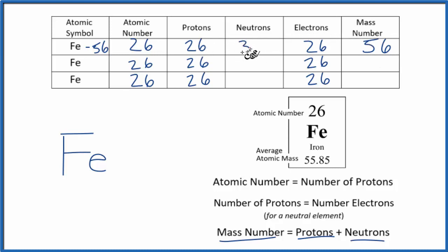26 plus 30, that'll give us 56. So for iron 56, we have the 26 protons, the neutrons 30, and then we have this mass number here.